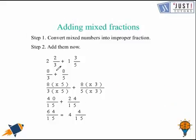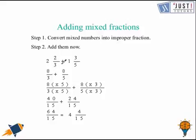Here's a question: 2 and 2 thirds added to 1 and 3 fifths. Step 1 is to convert to improper fractions. For the first: 3 times 2 is 6, plus 2 is 8, giving 8 over 3. For the second: 5 times 1 is 5, plus 3 is 8, giving 8 over 5.